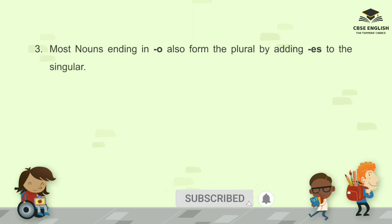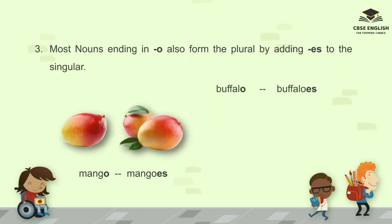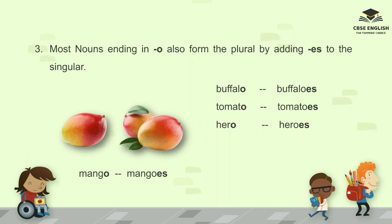Number three: most nouns ending in O also form the plural by adding ES to the singular. For example: mango, mangoes; buffalo, buffaloes; tomato, tomatoes; hero, heroes; potato, potatoes; echo, echoes.